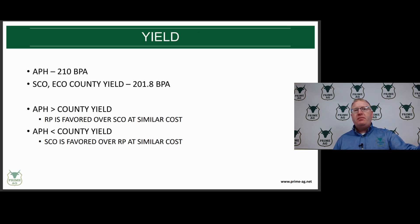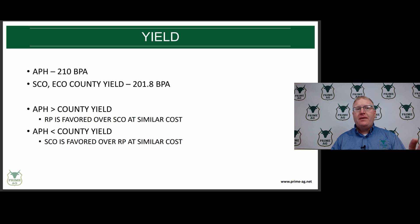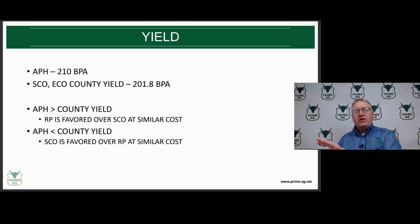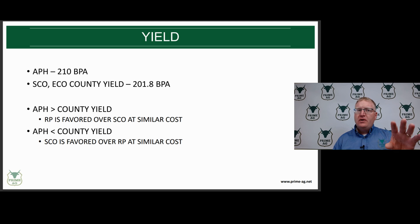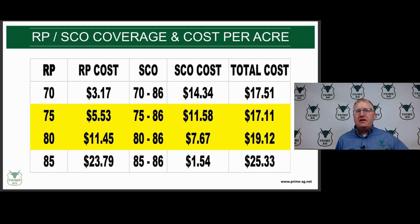Here's an example. I've got an APH of 210 bushels an acre, but the county yield is at 201.8. We mentioned before in our webinars that if your APH is above your county yield, then the revenue protection policy is favored a little bit more compared to having SEO when you have a similar cost. On the other hand, if your APH is below the county yield, we would favor SEO compared to revenue protection. So with this example, we would tend to favor revenue protection over SEO.